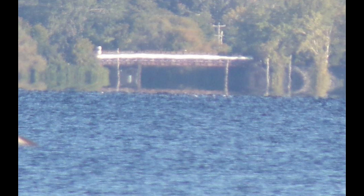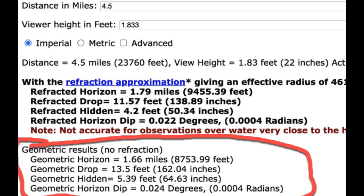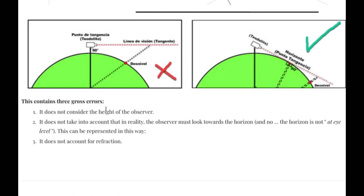Well, let's see where he went wrong, and it's very clear. I really like Metabunk's calculator here, and I've already done this. So you can see I'm putting in the distance in miles, which is 4.5 miles. The viewer height in feet is 1.833 feet, so this is his 22 inches. And it turns out, in all fairness to him, the geometric drop, which you'll see highlighted here in red, is 13.5 feet. So he reported 13 feet, so that's good. I don't doubt his numbers.